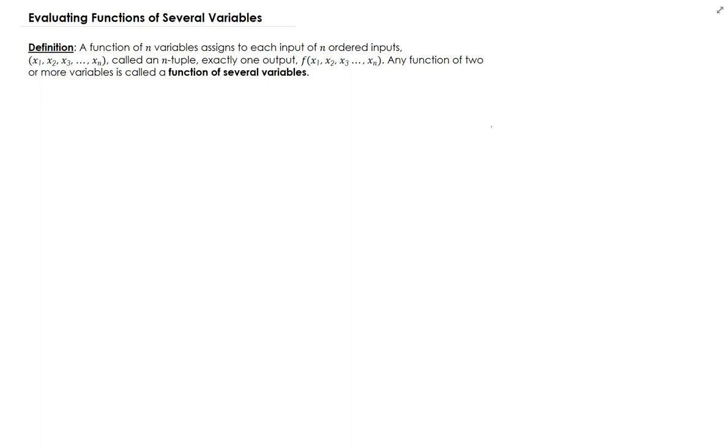So basically, if you have a function of n variables that assigns to each input of n ordered inputs, that input is called an n-tuple. If that's getting assigned to exactly one output, then that function is basically called a function of several variables.